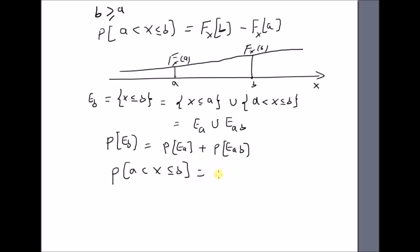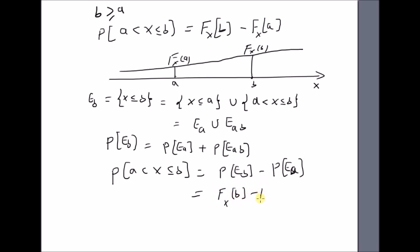which is going to be equal to: the probability of a less than x less than or equal to b equals the difference — that is, the probability of event E_b minus the probability of event A — which is nothing but the difference between the CDFs, that is F(x) of b minus F(x) of a.